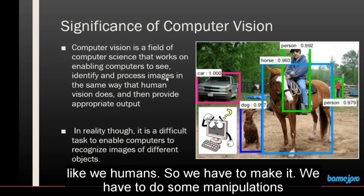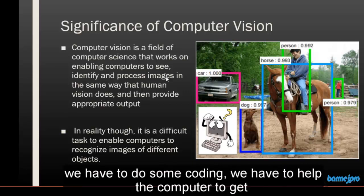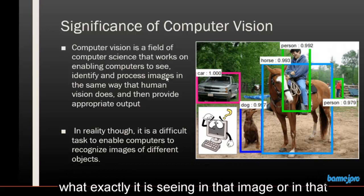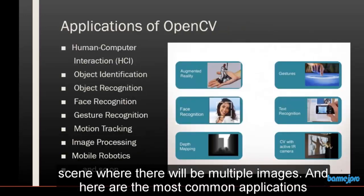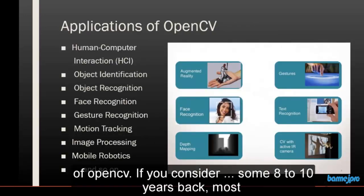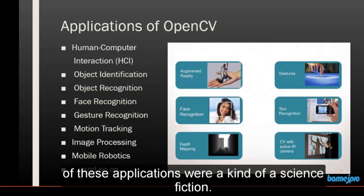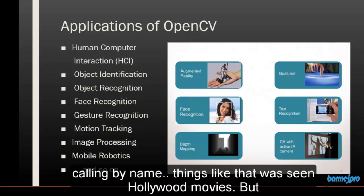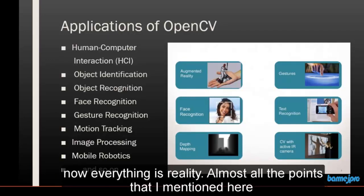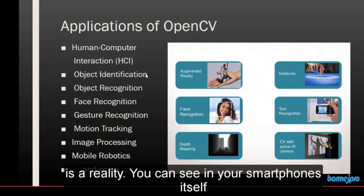We have to do some manipulations, some coding, and help the computer understand what exactly it is seeing in that image or in a scene with multiple images. Here are the most common applications of OpenCV. If you consider eight to ten years back, most of these applications were a kind of science fiction — computers identifying humans and calling them by name was seen in Hollywood movies — but now everything is a reality.